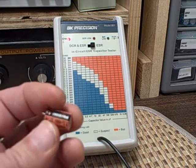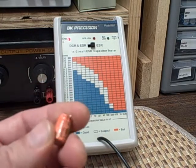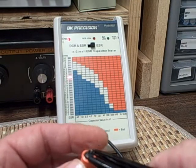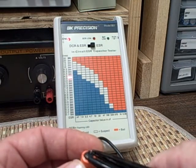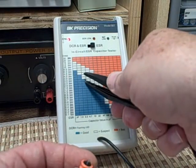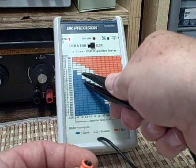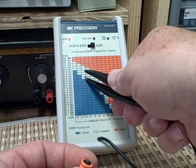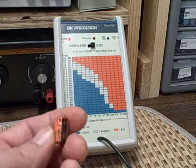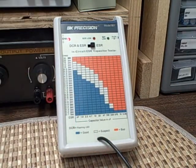Here's a 2.2 microfarad 450 volt capacitor. We're reading about 4 ohms. 2.2 you should be good up at 3, and 3.5 to 4 you're two levels into the questionable, so they consider this one a questionable one.